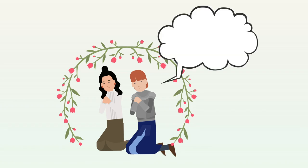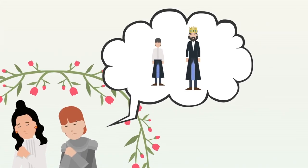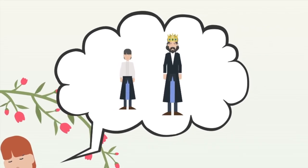His eldest surviving son Edward, who would inherit the crown as Edward II, was the last of his children with Eleanor.